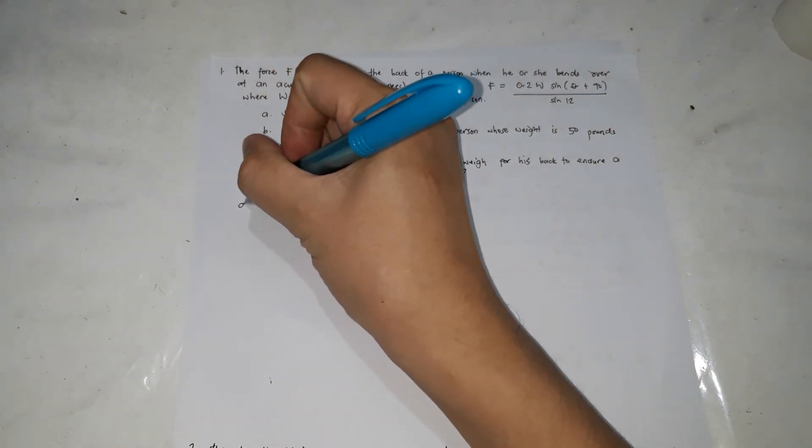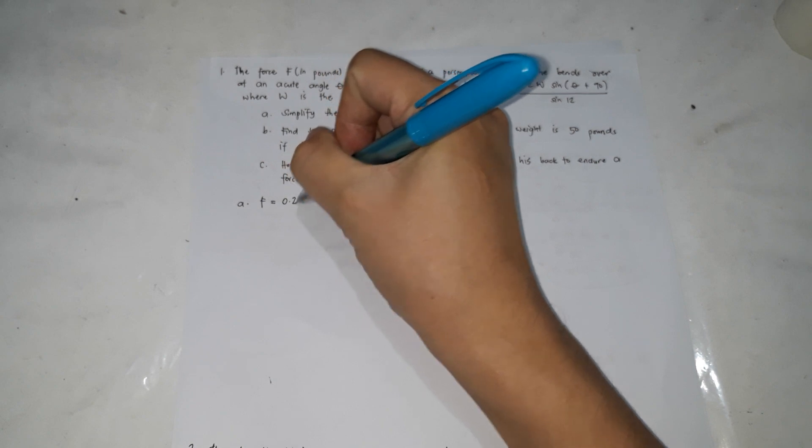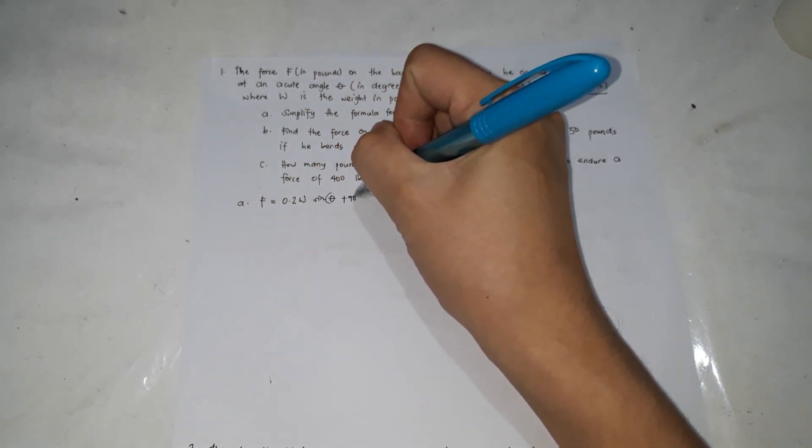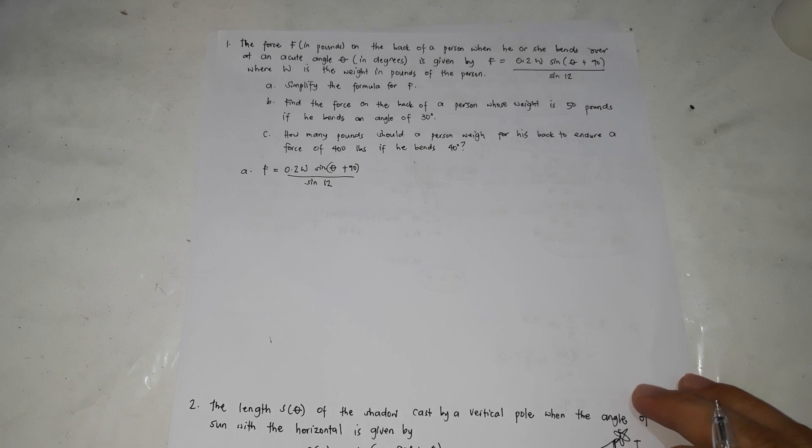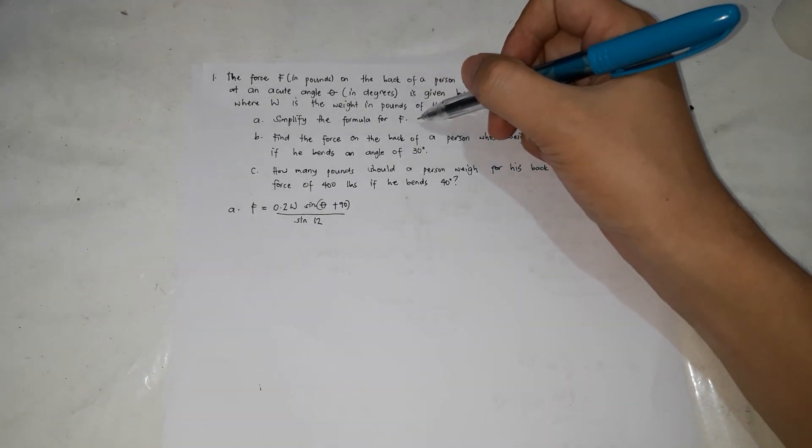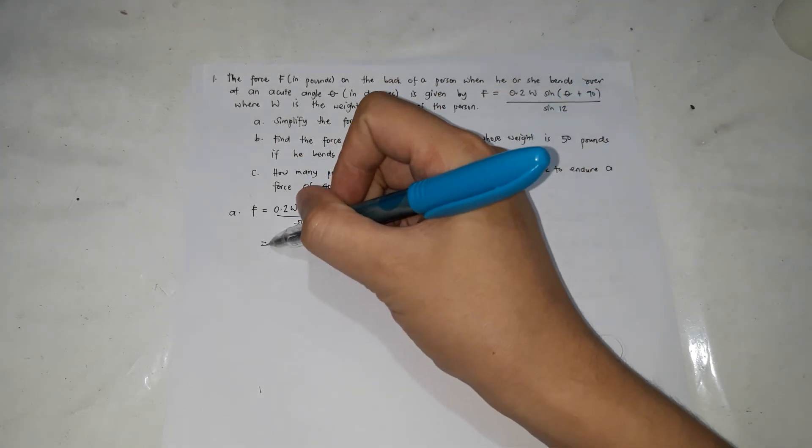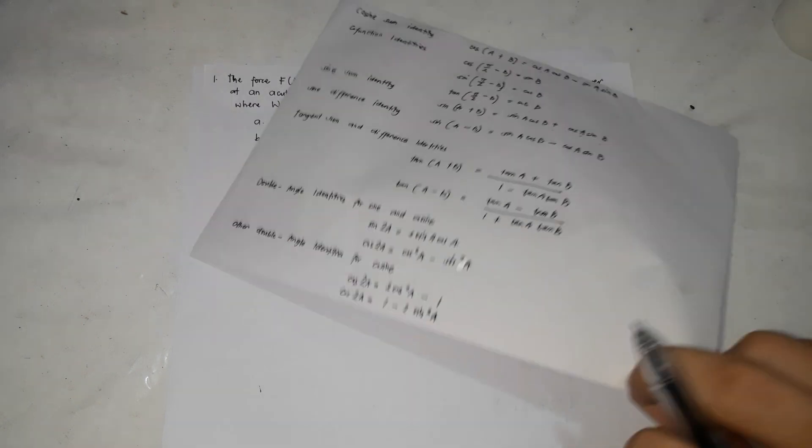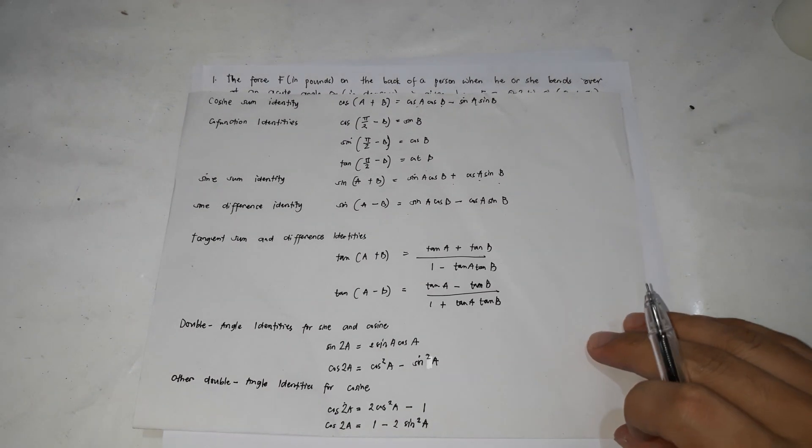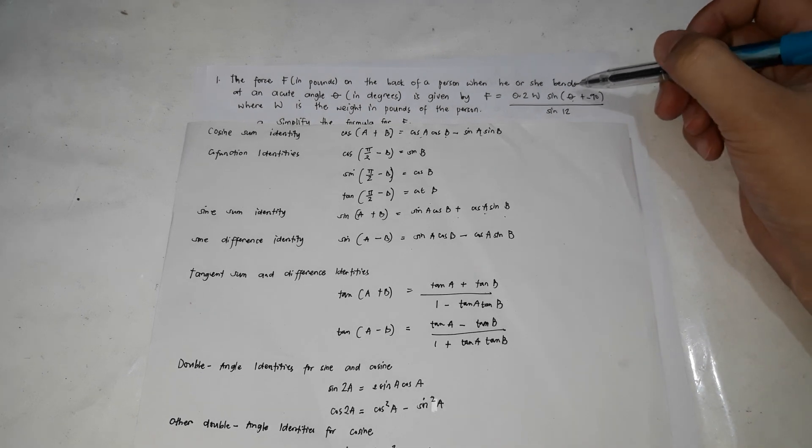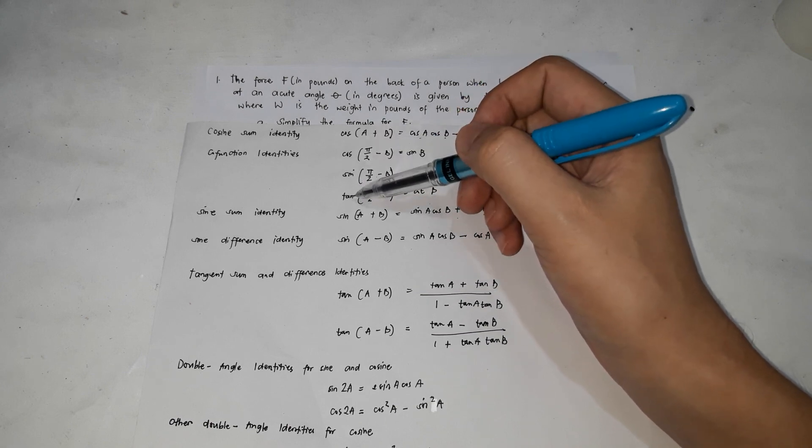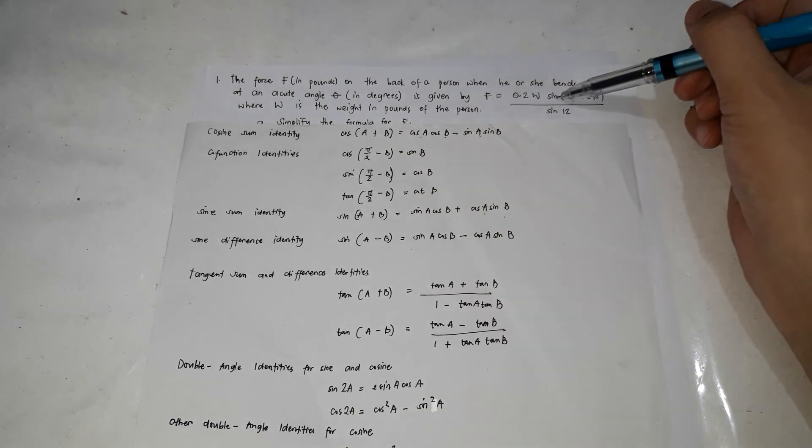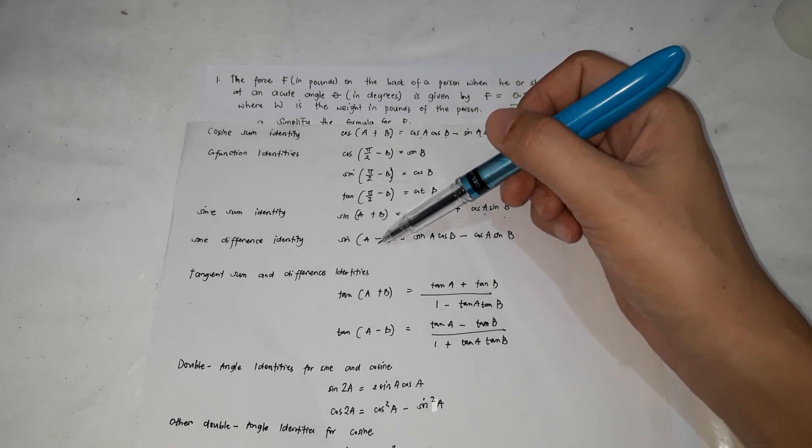For letter A, F equals 0.2W sine(theta plus 90) over sine 12. This is the formula. What we're going to do is simplify according to the situation and the problem. Using the identities, we're going to identify which identity we're going to use. Because it's sine(theta plus 90), it could be sum. We're going to identify sine. This cannot be used, tangent, cosine. We will not use them because it's given as sine.